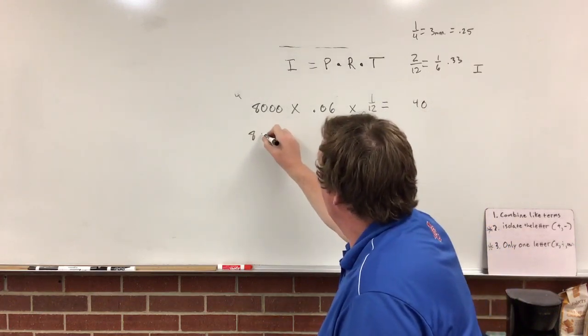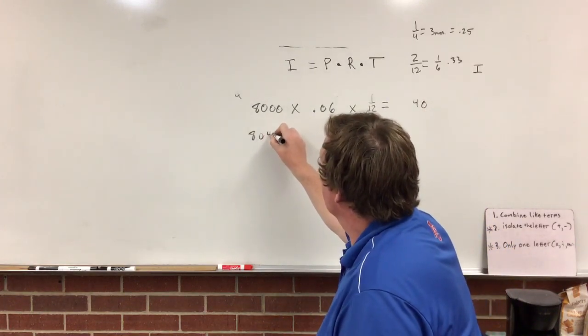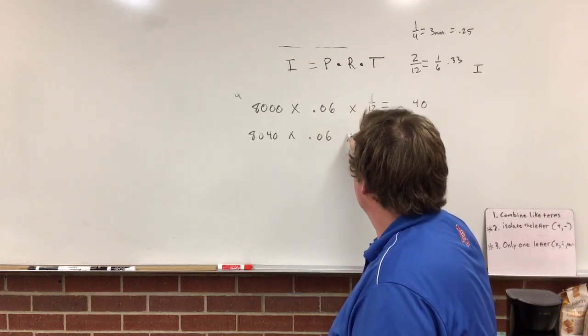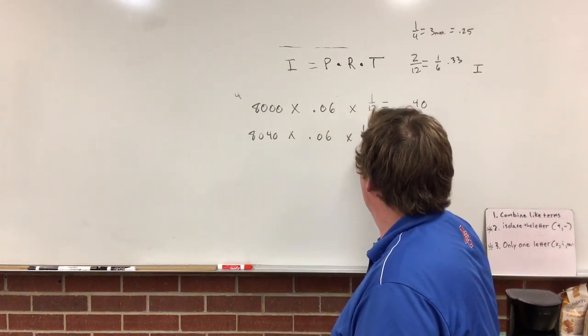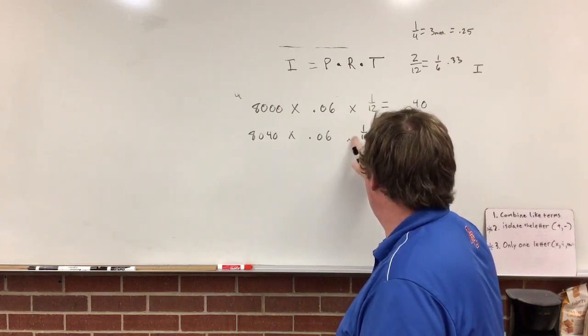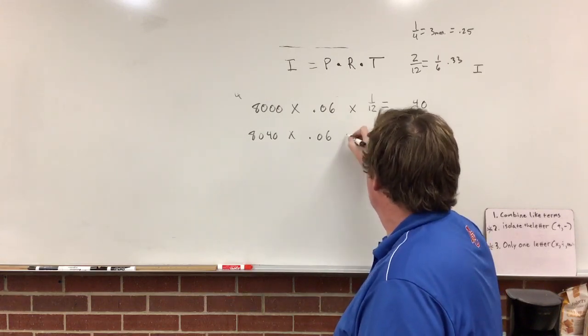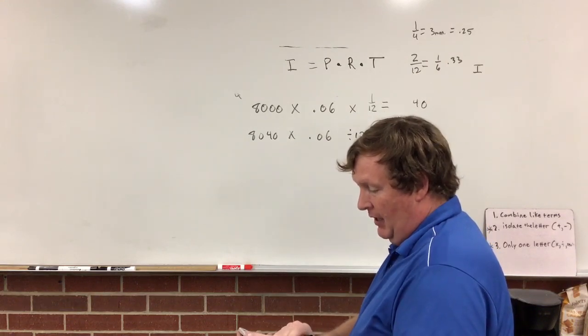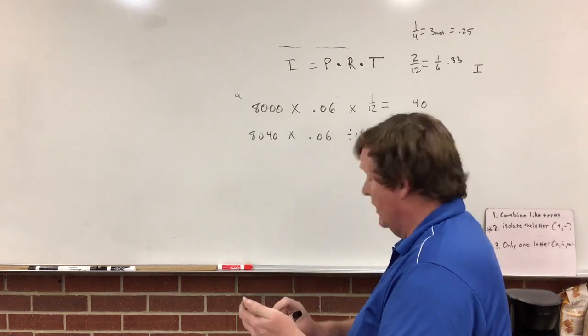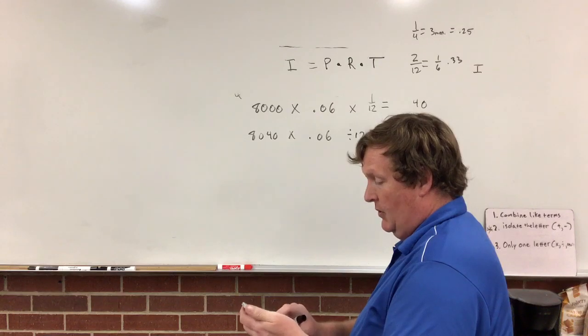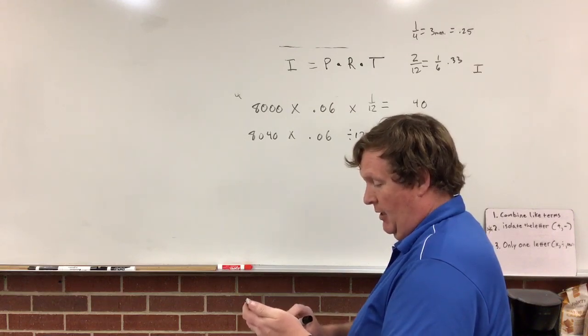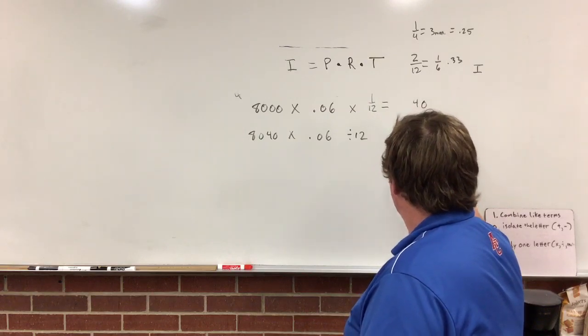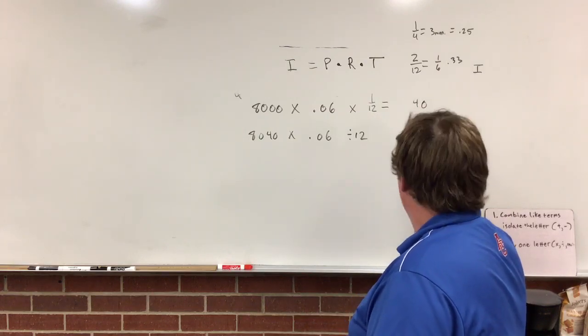So then you have $8,040 times 0.06 and then times 1 or 12 or divided by 12. So when you do that second one, 8,040 times 0.06 divided by 12, you end up with $40.20.